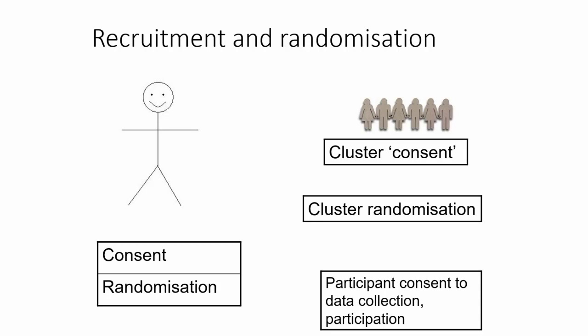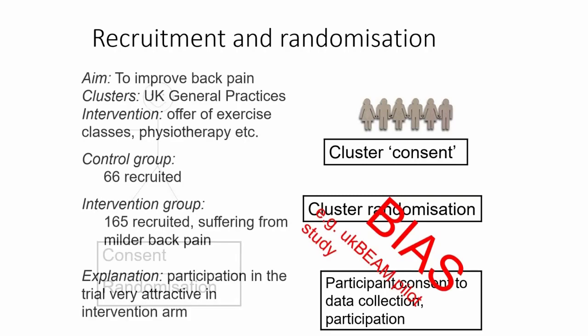Participants can, however, consent to data collection or to participation in some aspects of the trial. If you do your activities in that order — recruiting after randomisation — you're quite likely to get bias. The seminal example of this was the UK BEAM study published in 2005. In this study, they wanted to improve back pain by recruiting individuals with back pain from UK general practices. They randomised practices, and some practices were able to offer patients extra exercise classes, physiotherapy, and other things.